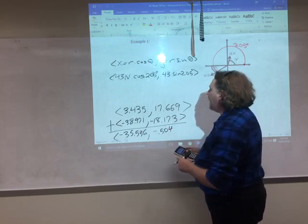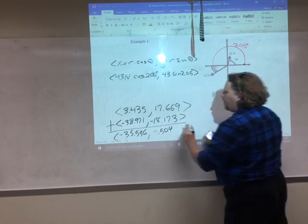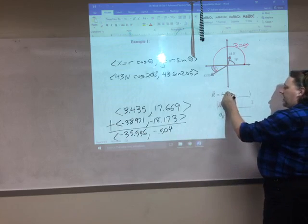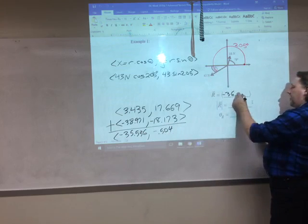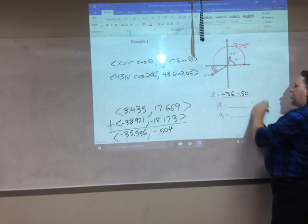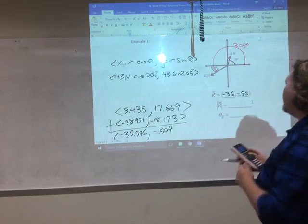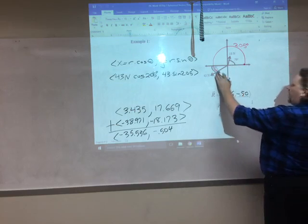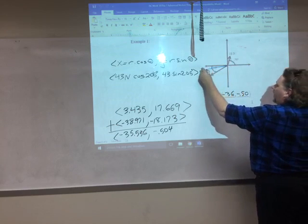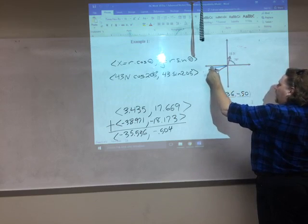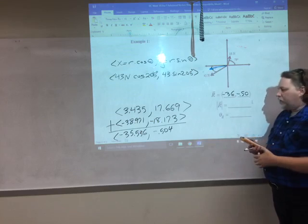And for the Y component, 17.669 plus negative 18.173 gives me negative 0.504. Now it's time to round. I have two significant figures in my problem. So 35.536 is going to round to negative 36. And negative 0.504 is going to round to negative 0.50. So if I wanted to draw my result, my result is going 36 to the left and 0.5 down. Way off to the left and just a little bit down. And they are in blue. That's more or less where my overall result is.